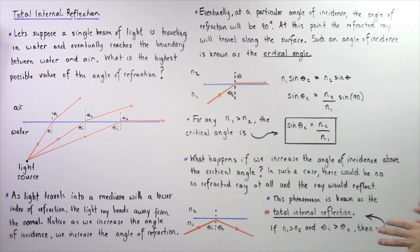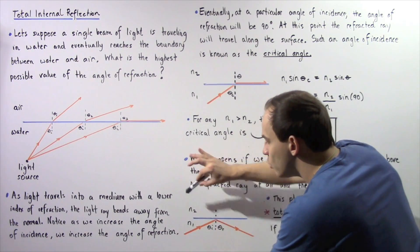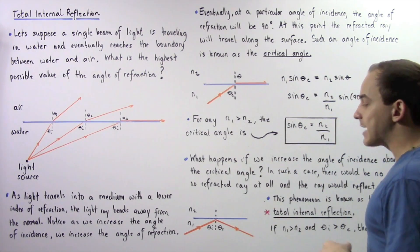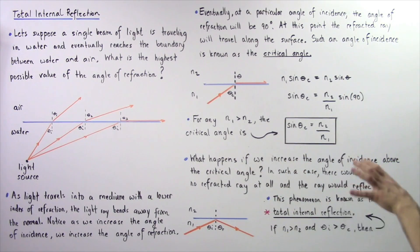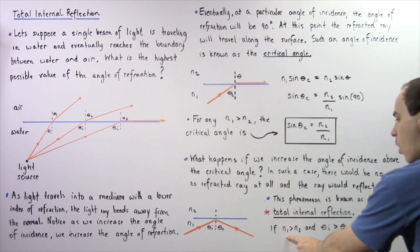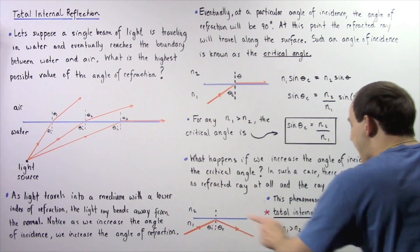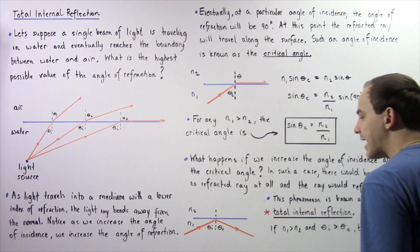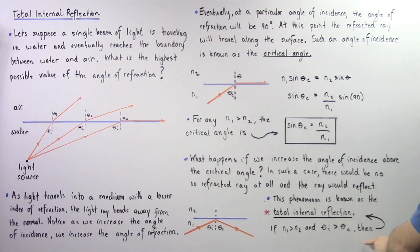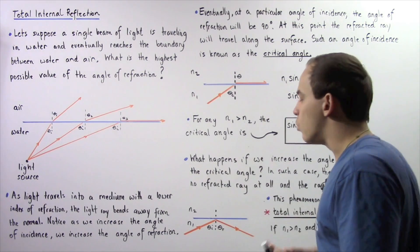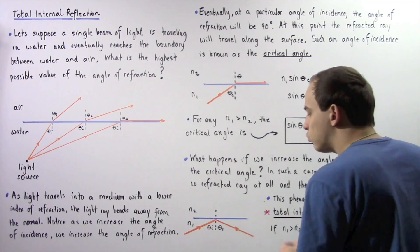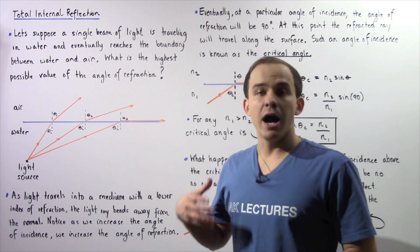Total internal reflection only works as long as N2 is less than N1 — that is, the ray of light is traveling from a medium with a higher index of refraction into a medium with a lower index of refraction. So, if N1 is greater than N2 and the angle of incidence is greater than the critical angle, we get total internal reflection of light, meaning all the light reflects. The angle of reflection is always equal to the angle of incidence, as per the law of reflection.